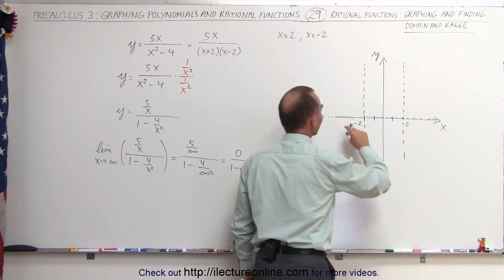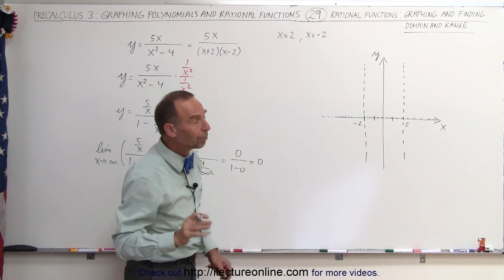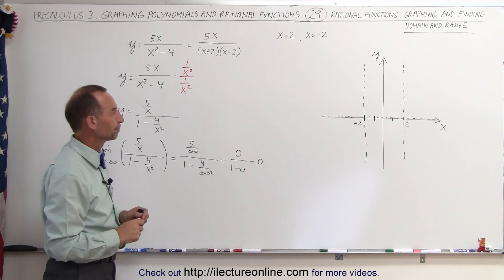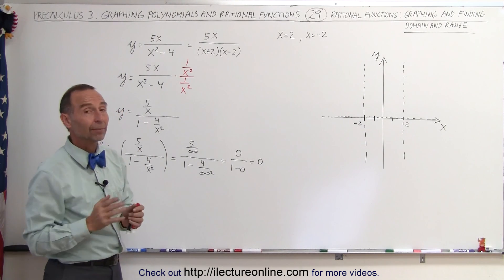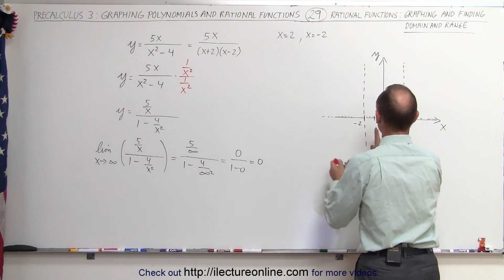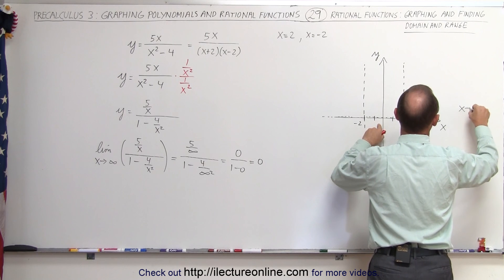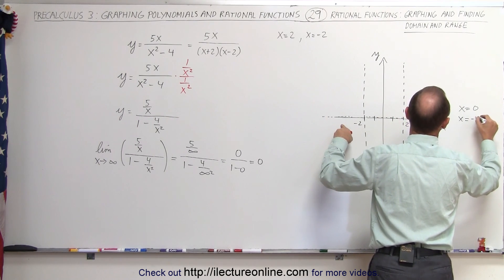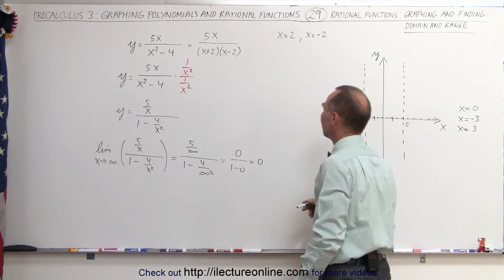So now we have basically six regions. Notice the vertical asymptotes cannot be crossed, but the horizontal asymptotes can be crossed. Now let's try to find what the graph looks like by trying some test points. We have three regions between the vertical asymptotes, so x = 0 will represent the middle region.